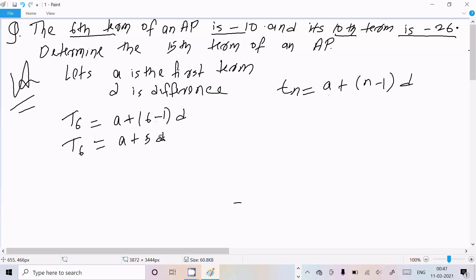And here T₆ is -10, so here A + 5D = -10. This is equation 1.